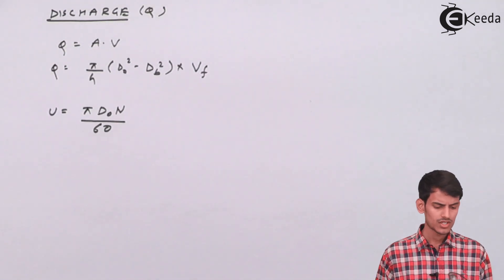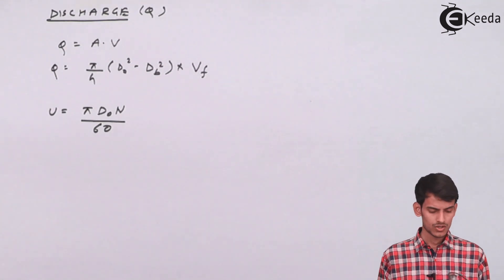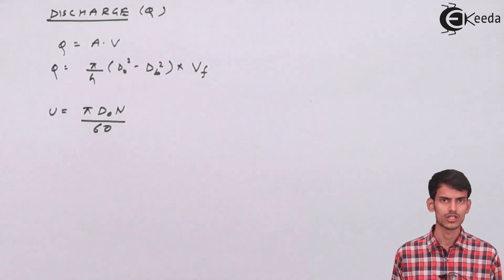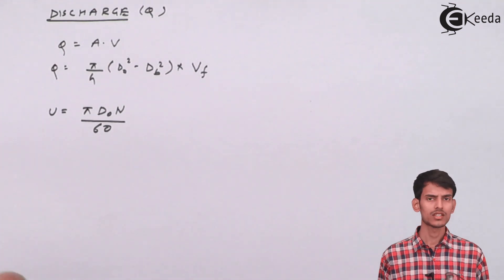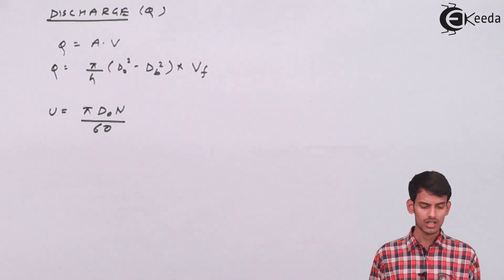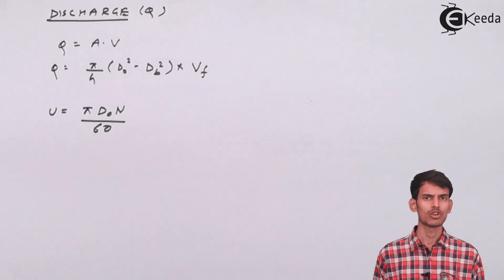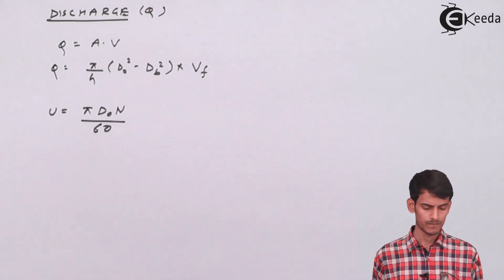The discharge and velocity formulas, as well as the velocity triangles, remain the same as we saw for the Francis turbine. The only difference is the value of discharge and the peripheral velocity — the discharge formula is slightly different here because the setup has changed. The formulas for efficiencies — mechanical efficiency, overall efficiency — all remain the same as in the Francis turbine. I hope you've understood this topic. Thank you.